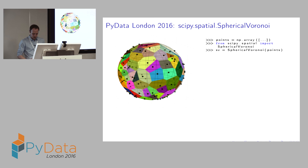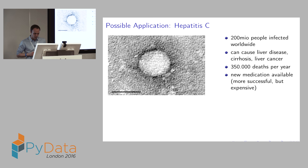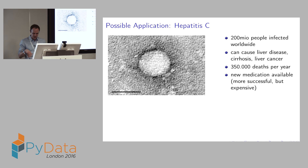You might wonder what the possible applications of spherical Voronoi diagrams are. Tyler is working in computational virology — a relatively new branch that tries to analyze how viruses work by means of computer models. The viruses he analyzes are viruses like the dengue virus or hepatitis C. The hepatitis C virus is still quite a serious problem: there are 200 million infections worldwide, it causes liver disease, cirrhosis, even liver cancer, and there are 350,000 deaths per year.